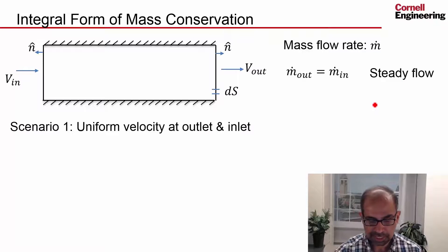First let me take a look at the scenario where I have uniform velocity coming in and uniform velocity going out. This is the simpler scenario. And let me also say that the velocity at the inlet and outlet is perpendicular to the surface.